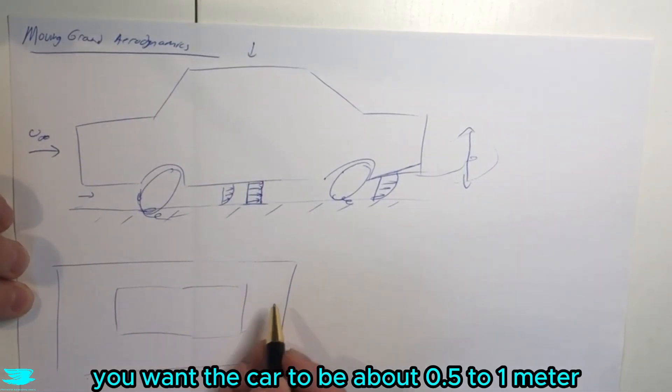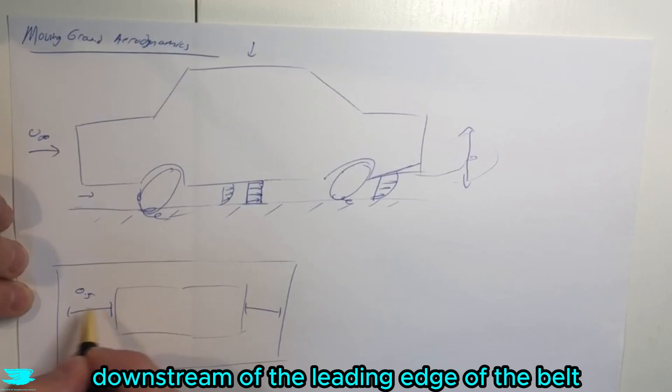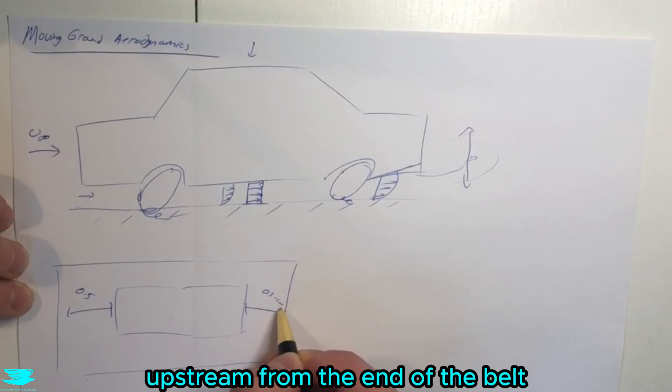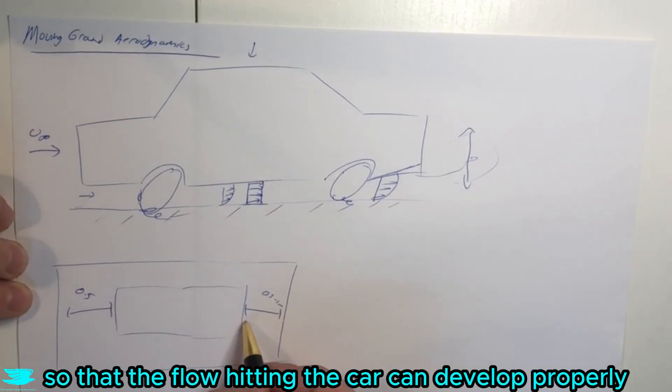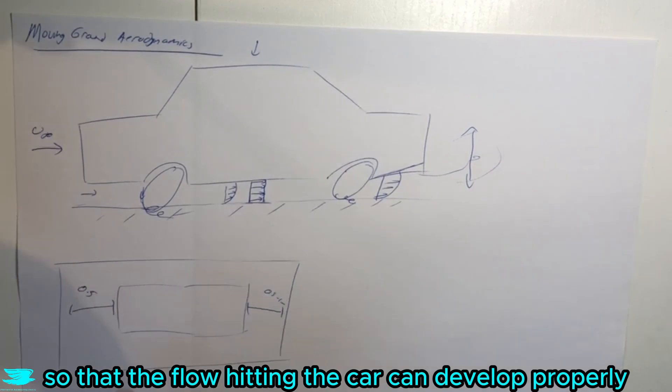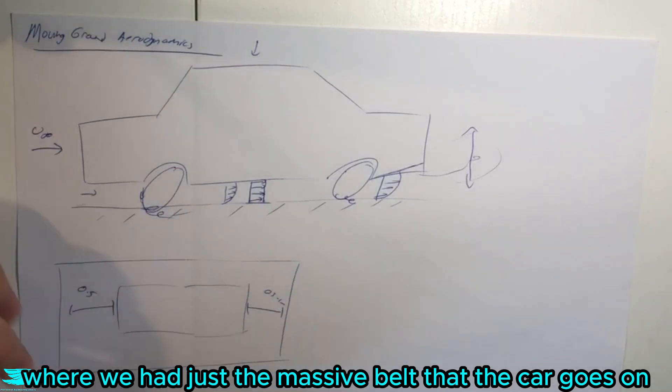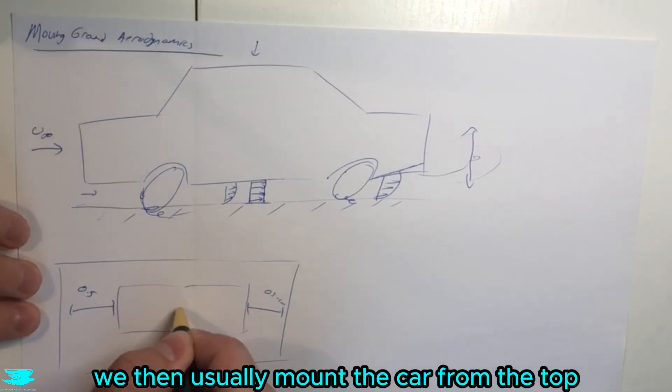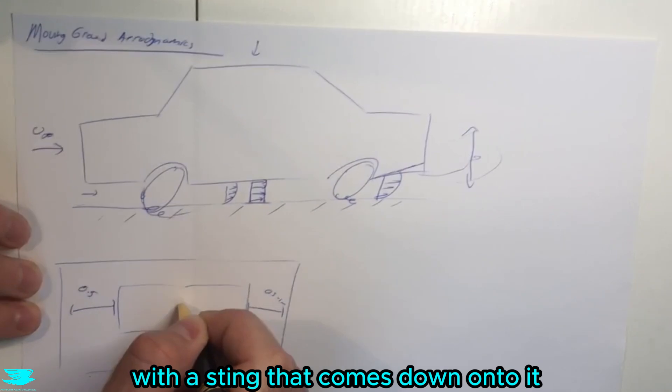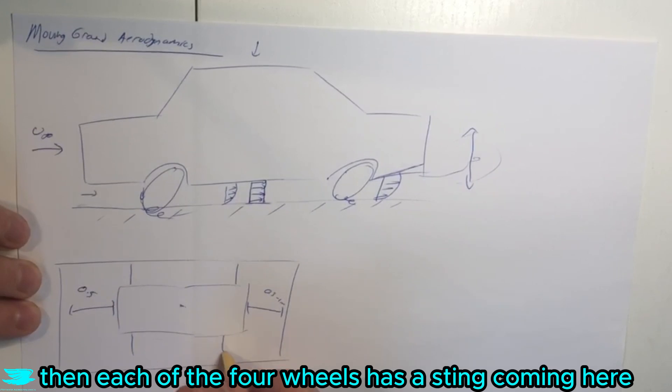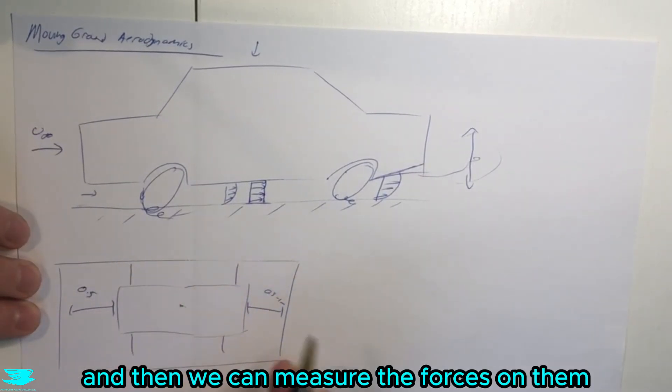Then you have the car situated on here. Usually you want the car to be about 0.5 to 1 meter downstream of the leading edge of the belt and about 0.5 to 1 meter upstream from the end so that the flow hitting the car can develop properly. We then usually mount the car from the top with a sting that comes down and supports it. Each of the four wheels has a sting coming along, and we can measure the forces on there.